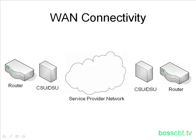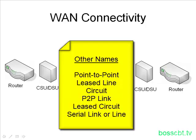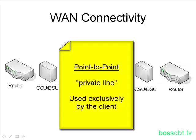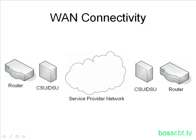When we talk about WAN connectivity, we focus on the point-to-point circuit. You'll hear several names for circuits in general: leased line, circuit, P-to-P for point-to-point, leased circuit, serial link, or serial line — these all refer to the same thing. A point-to-point circuit connects two points, point A to point B, and that's it. No one else has access except those two points, so it's sometimes referred to as a private line or private circuit, exclusive to the people who purchased it from the service provider, giving a certain amount of security.